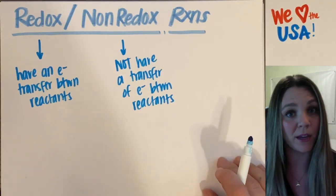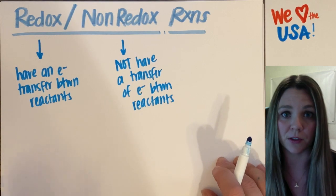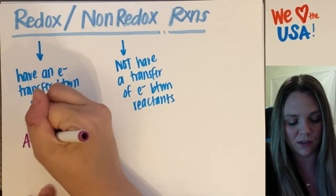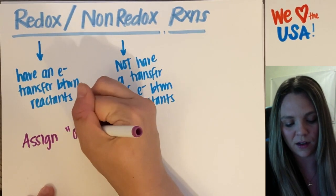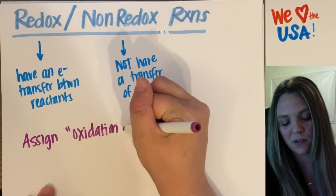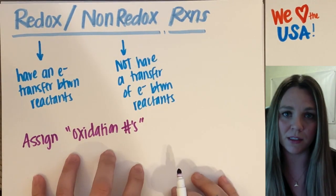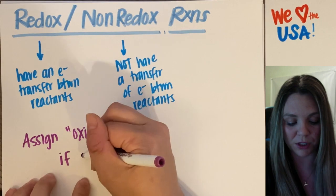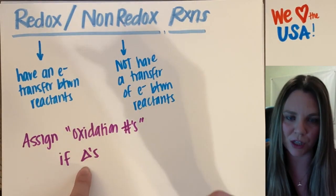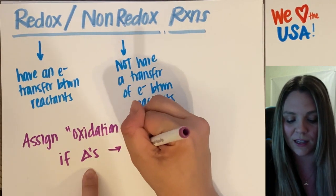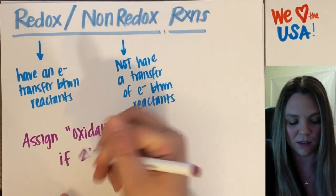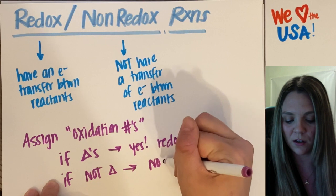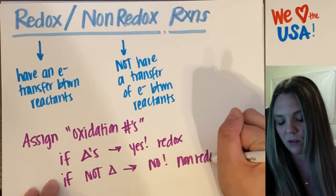You have a reaction in front of you and now you need to determine if that is actually a redox reaction. We use oxidation numbers — you assign oxidation numbers to every element and look to see if your oxidation number changes. If the number does change, then yes, you have a redox reaction. If your oxidation numbers do not change, then you have a non-redox reaction.